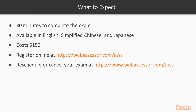You have 18 minutes to complete the exam. The exam is available in English, Simplified Chinese, and Japanese. It costs $150 and you have to register online at webassessor.com and then choose a testing center.